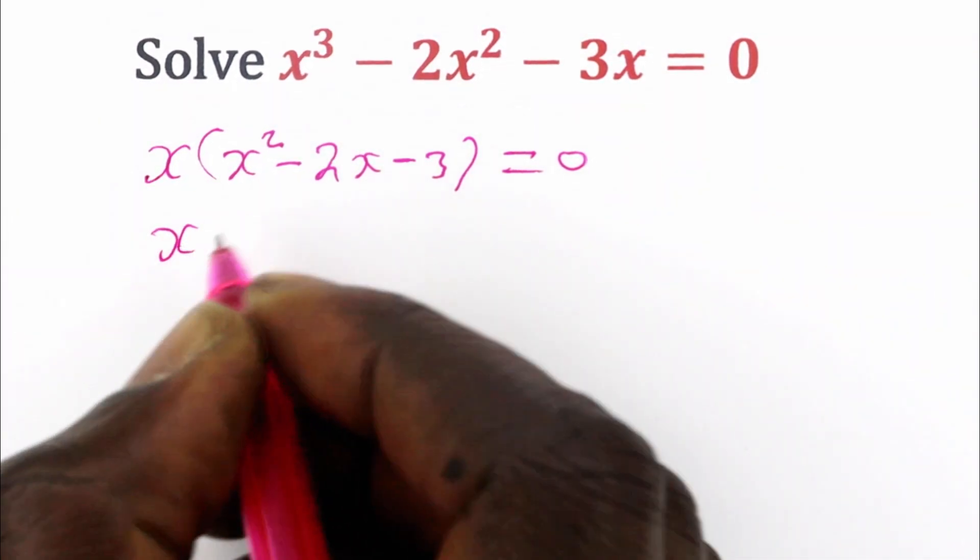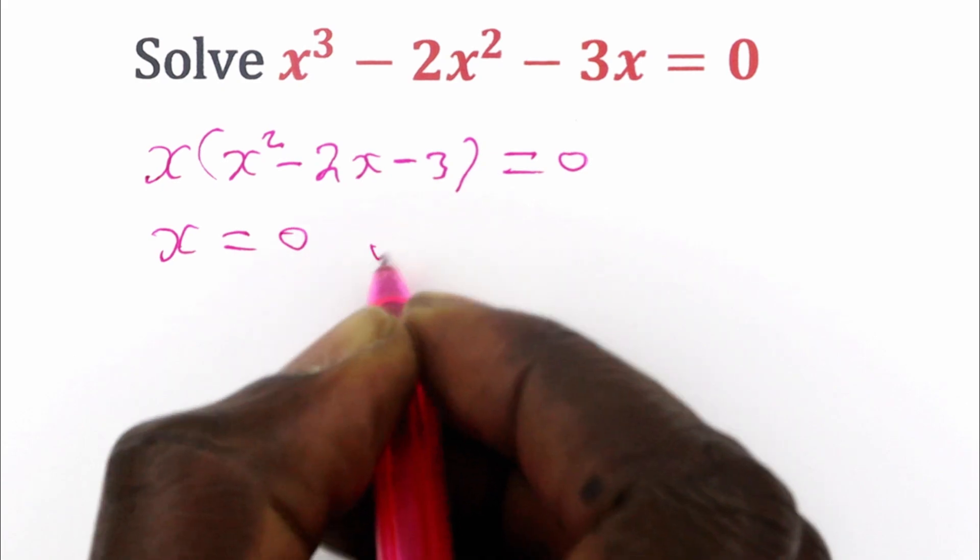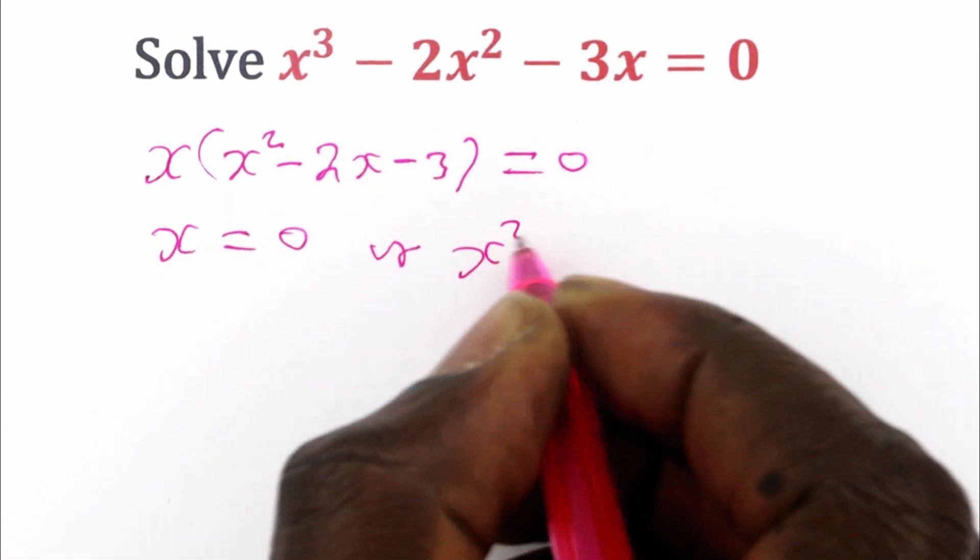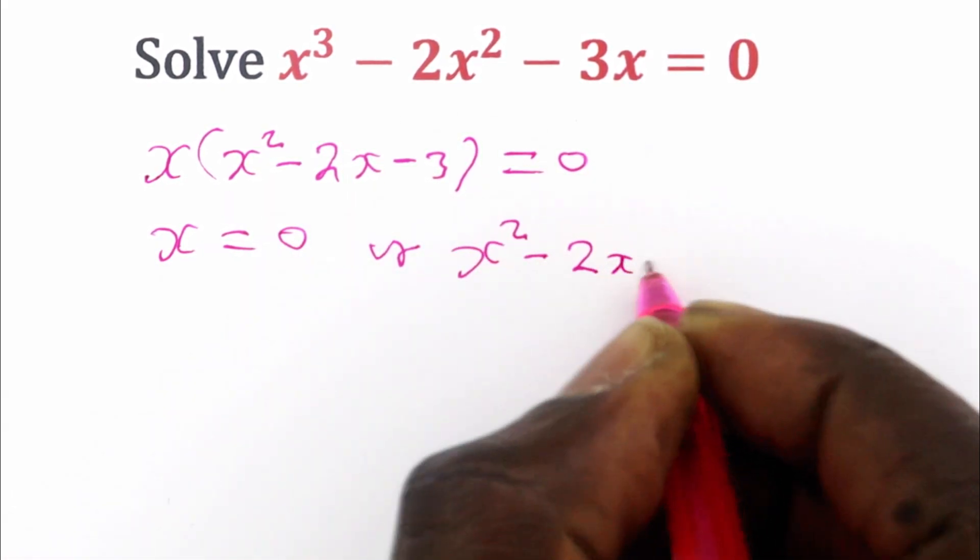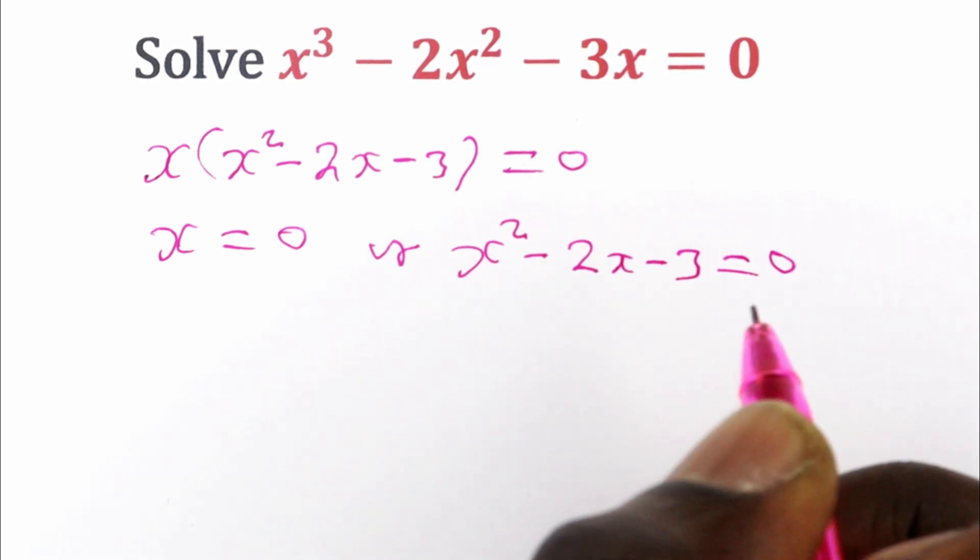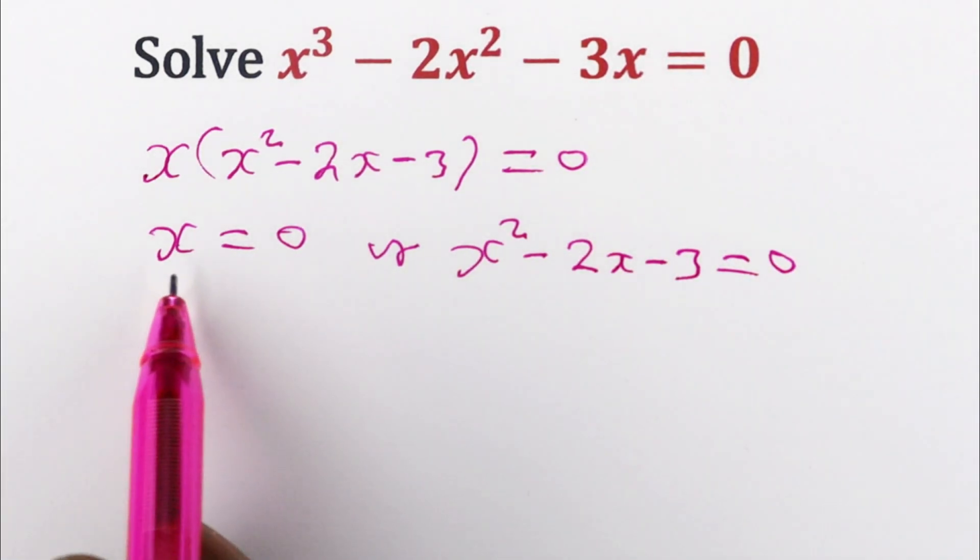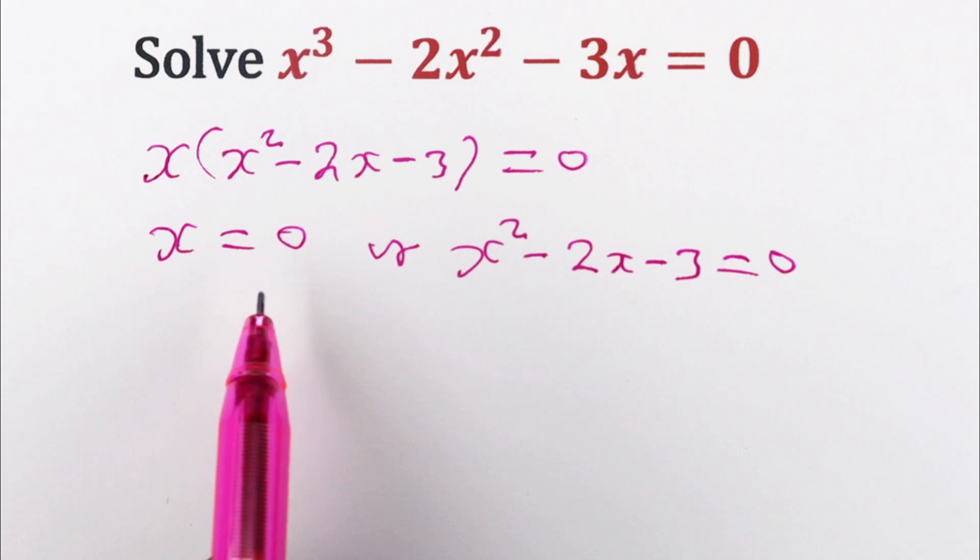So it means either x is equal to 0, or x squared minus 2x minus 3 is the one that is equal to 0. So it means we already have one value for x. Now we can solve this quadratic equation to get other values of x.